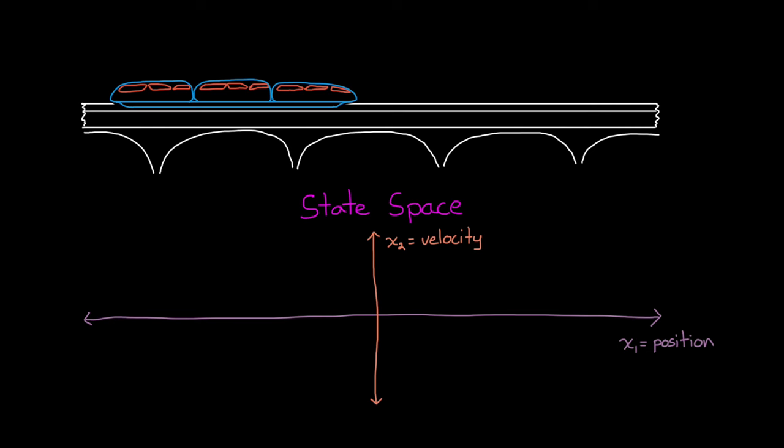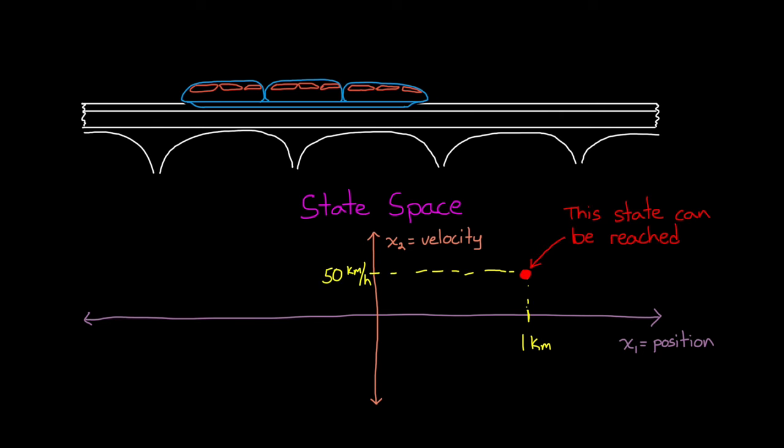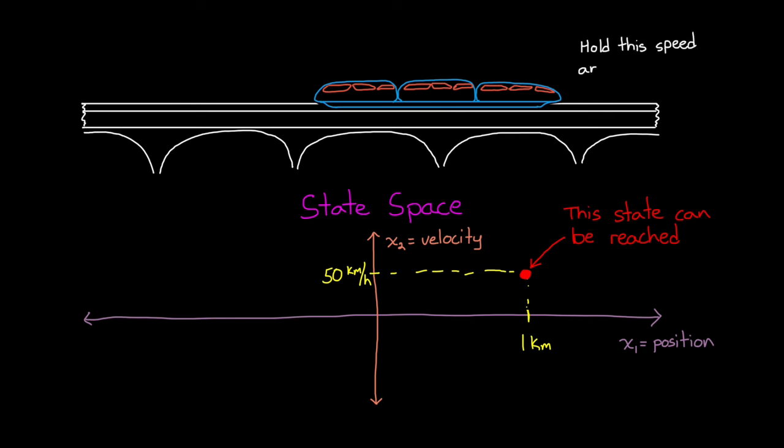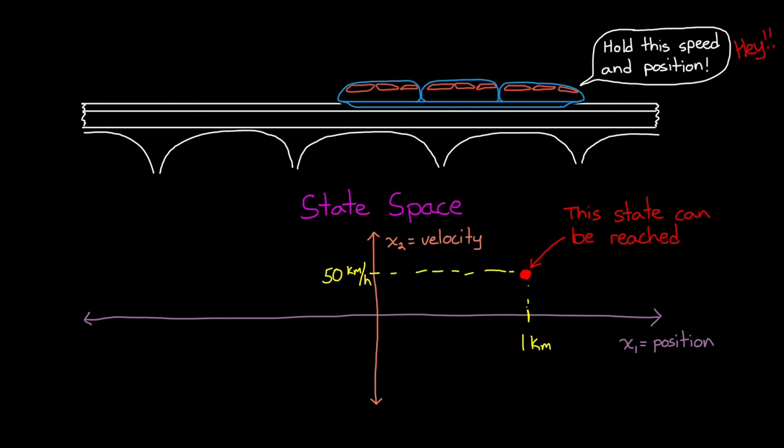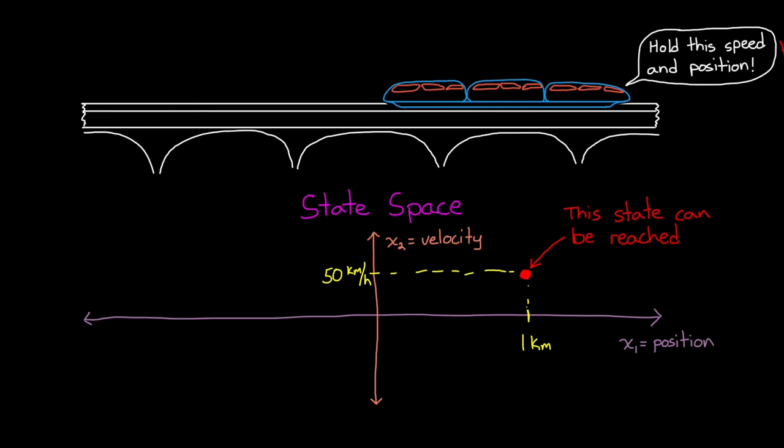For example, we could accelerate in a way that could get us to a position of one kilometer at 50 kilometers per hour. Hence, it can reach that state in the state space. However, it should be obvious that it's physically impossible to maintain that state. This is why controllability requires the system to be able to reach a state, but not necessarily maintain it.